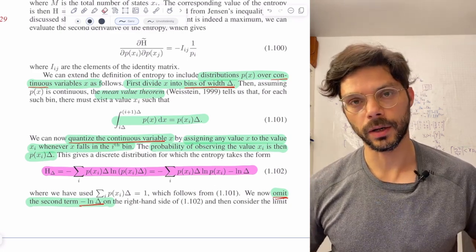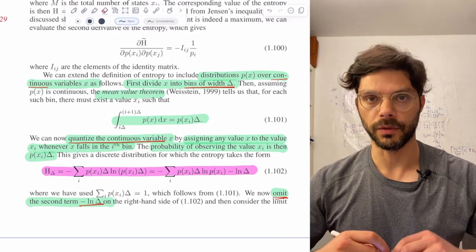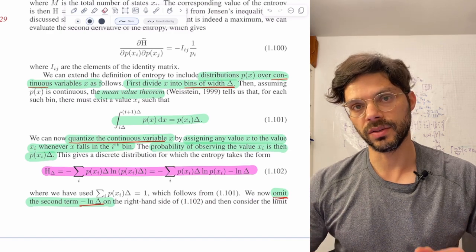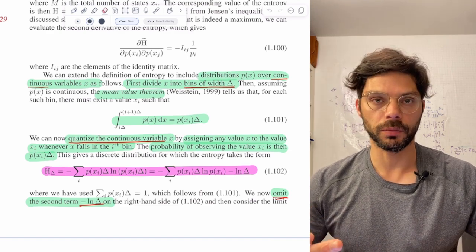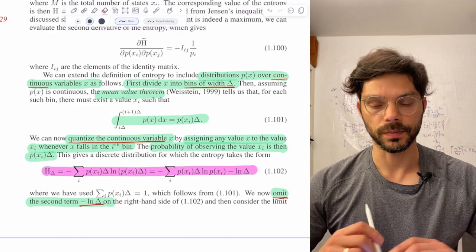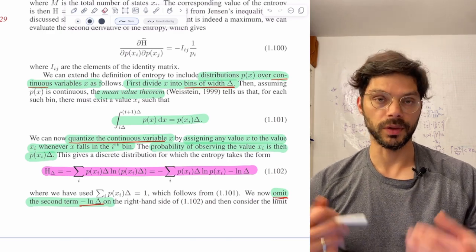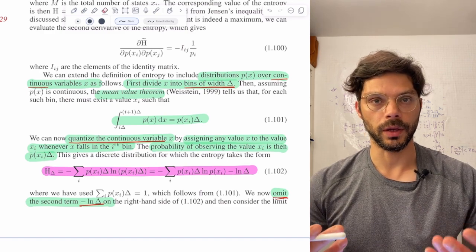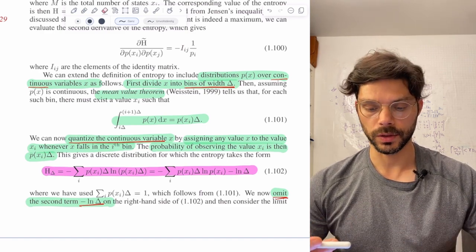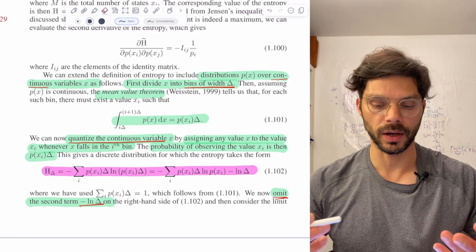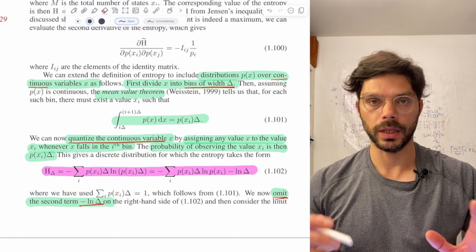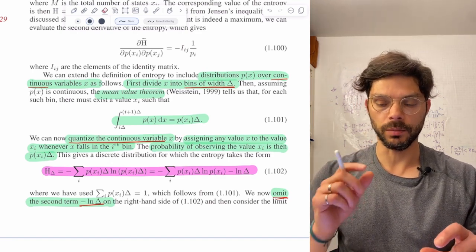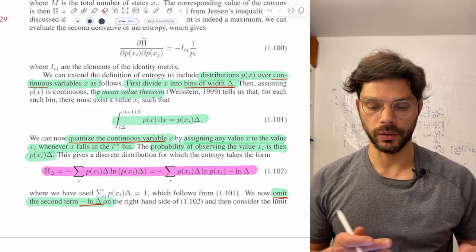Today we're going to continue with our discussion about information theory and talk about how to extend the notion of entropy to continuous distributions. So far we've been working with discrete distributions, and now we're going to try to come up with a notion of entropy for continuous distributions. The form it's going to take is probably what you would expect, but there is one important deviation that we need to discuss.